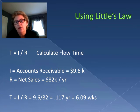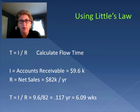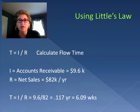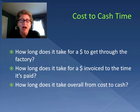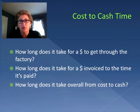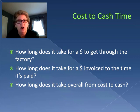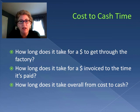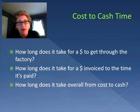That's a long time. So what we can do is say if this is taking a long time, why don't we take a look at the process itself and see whether we can shorten it. By using Little's Law we can figure out how long it takes from the time we put a dollar out to start manufacturing something to the time we actually get money back from the customer, which is known as the cost-to-cash time. We figure out how long it takes to get through the factory, how long it takes for an invoice to be paid, and adding those together gives us how long it takes overall from cost to cash.